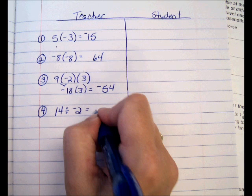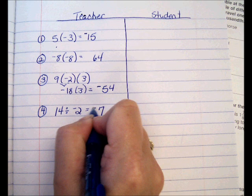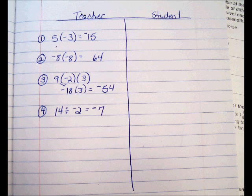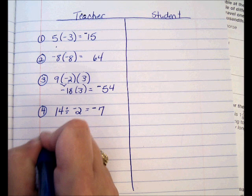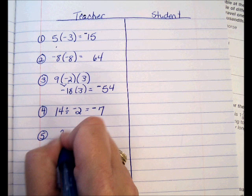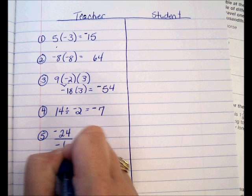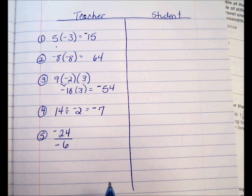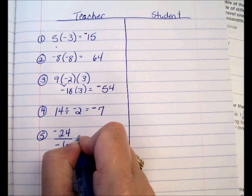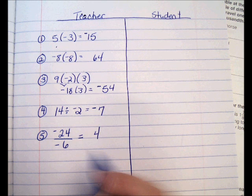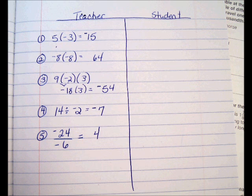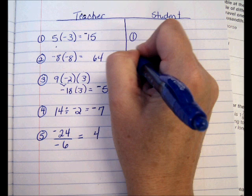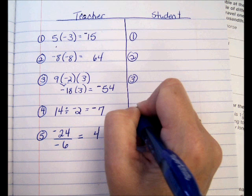This rule also works for division. Fourteen divided by negative 2: divide — 14 divided by 2 is 7 — different signs, so they're fighting — the answer is negative 7. You can also show division as a fraction: negative 24 divided by negative 6. Fractions represent division, so think of it as a division problem. 24 divided by 6 is 4, and same signs means the answer is positive 4.